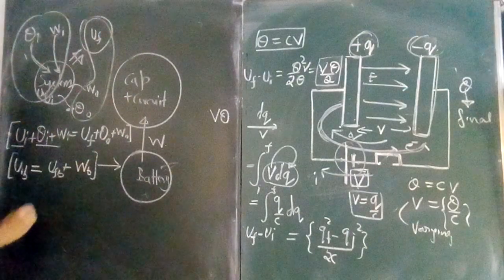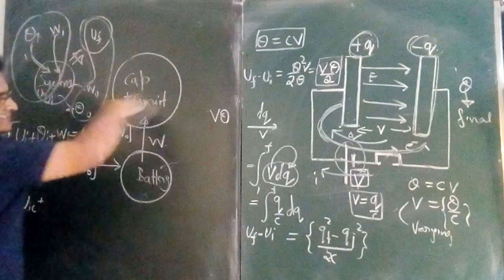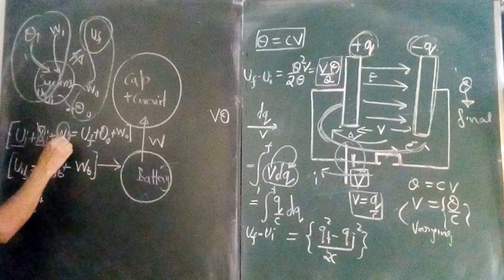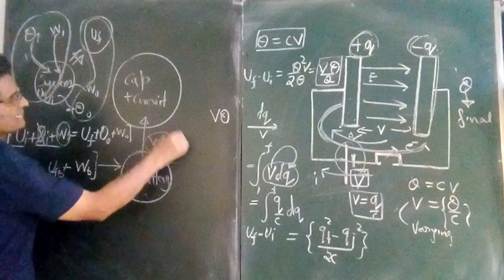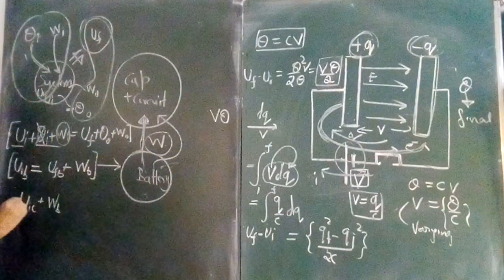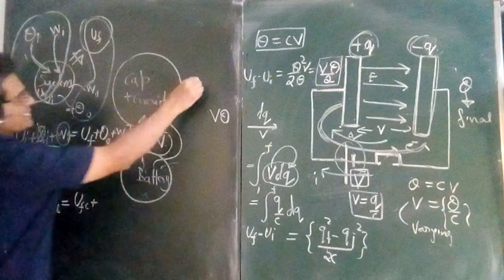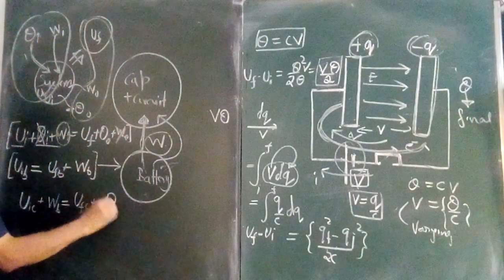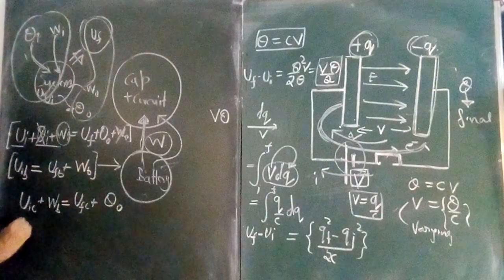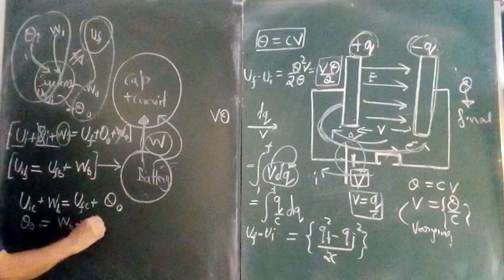For the capacitor subsystem: the initial energy of the capacitor plus no heat input plus the work coming in from the battery (WB) equals the final energy of the capacitor plus zero work done by the capacitor, plus any heat Q out that may be dissipated. So the equation is: U initial capacitor plus WB equals U final capacitor plus Q out.